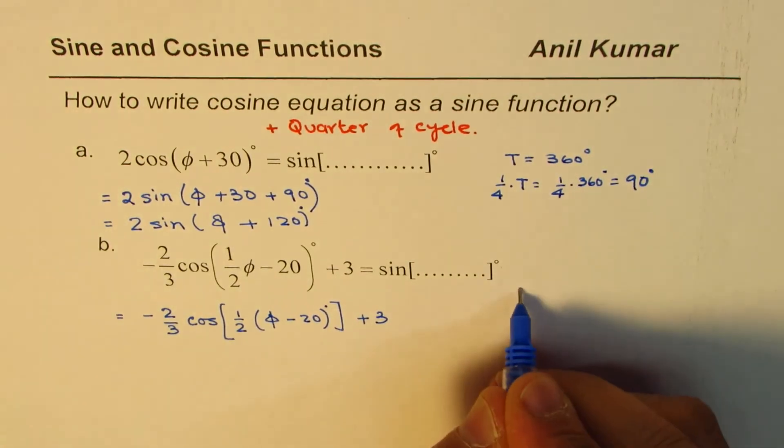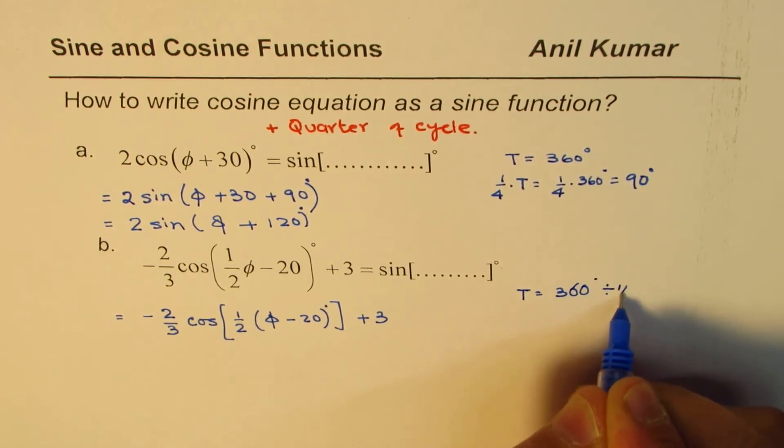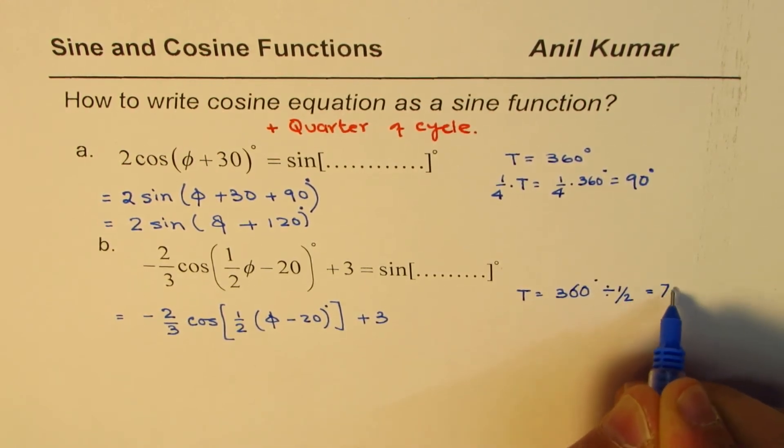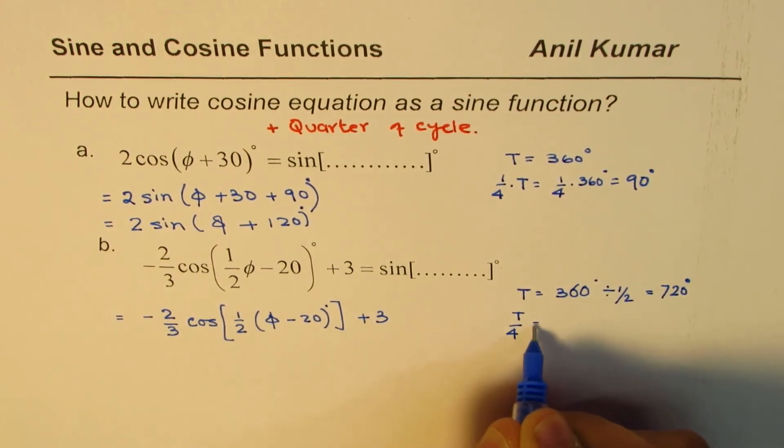Now this half, that means time period equals 360 degrees divided by half which is 720 degrees, and one-fourth of 720...